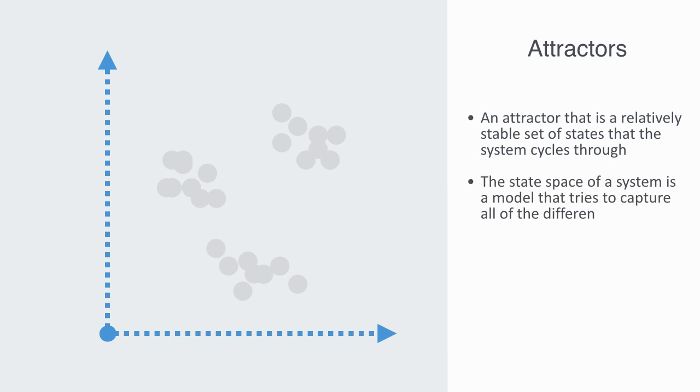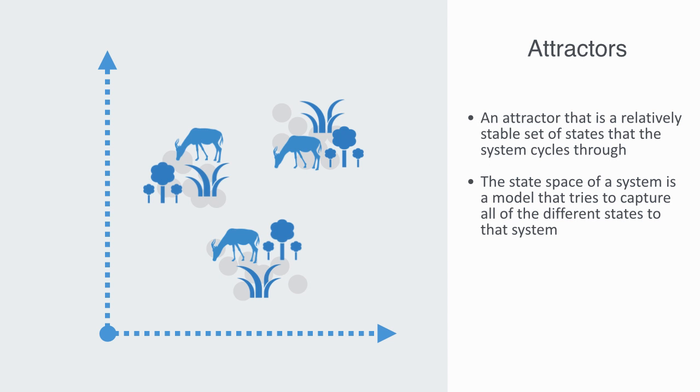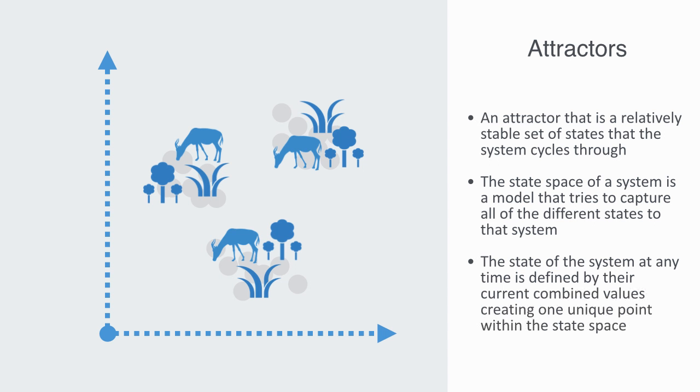If, for example, we define a rangeland system by the amount of grass, shrubs, and livestock that are present, then the state space is the three-dimensional space of all possible combinations of the amount of these three variables. The state of the system at any time is defined by their current combined values, creating one unique point within the state space that represents the overall makeup to that system at that point in time.